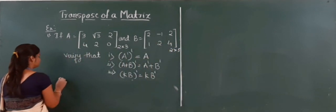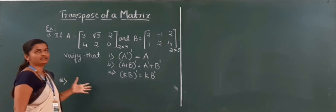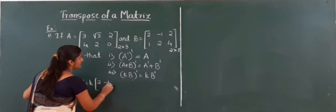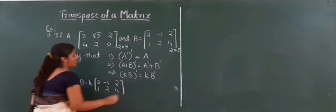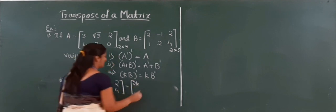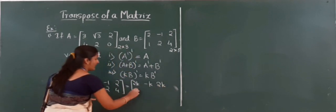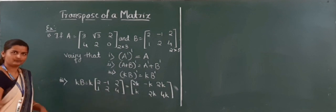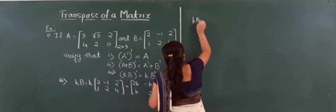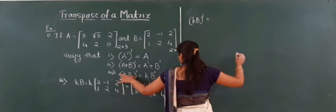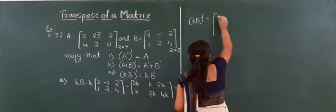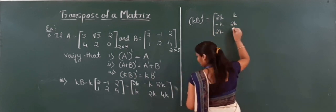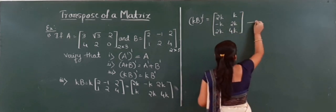For the third sub-question, we verify (kB)' = k into B'. They have not mentioned the exact value of k, so I work with k symbolically. Multiplying k to matrix B gives: 2k, minus k, 2k, k, 2k, 4k. Now applying transpose — writing rows as columns: 2k, minus k, 2k in the first column and k, 2k, 4k in the second column. This is (kB)' — call it C.